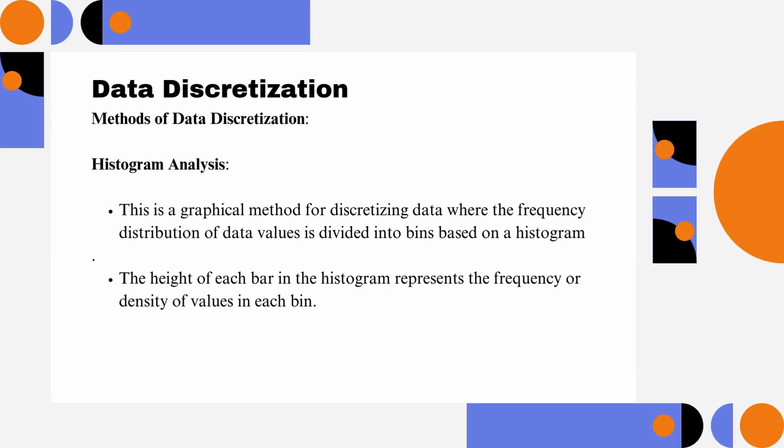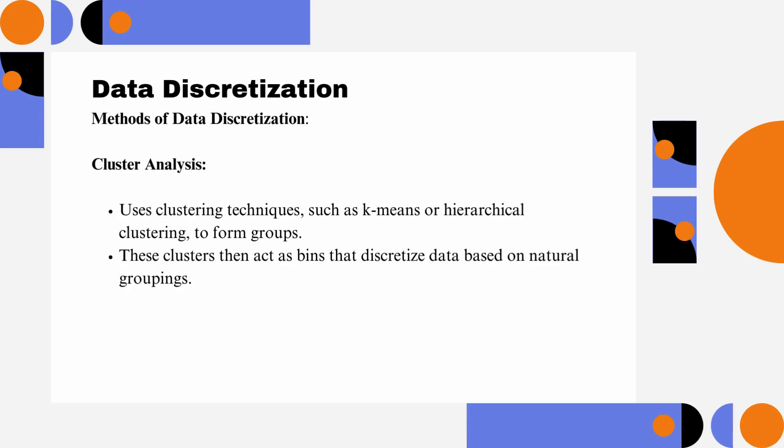Histogram Analysis: This is a graphical method for discretizing data where the frequency distribution of data values is divided into bins based on a histogram. The height of each bar in the histogram represents the frequency or density of values in each bin. Cluster Analysis: Uses clustering techniques, such as k-means or hierarchical clustering, to form groups. These clusters then act as bins that discretize data based on natural groupings.